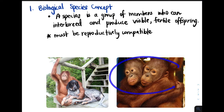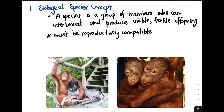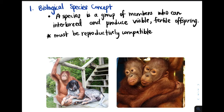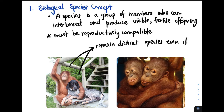Looking at this photo, these two orangutans are reproductively compatible, so they do belong to the same species. However, in the photo on the left we have a dog and an orangutan. There are many things that keep these two members of different groups from interbreeding, but if they did mate, they would not be able to produce viable and fertile offspring. Therefore, these two remain distinct biological species, and this is true even if they live together.